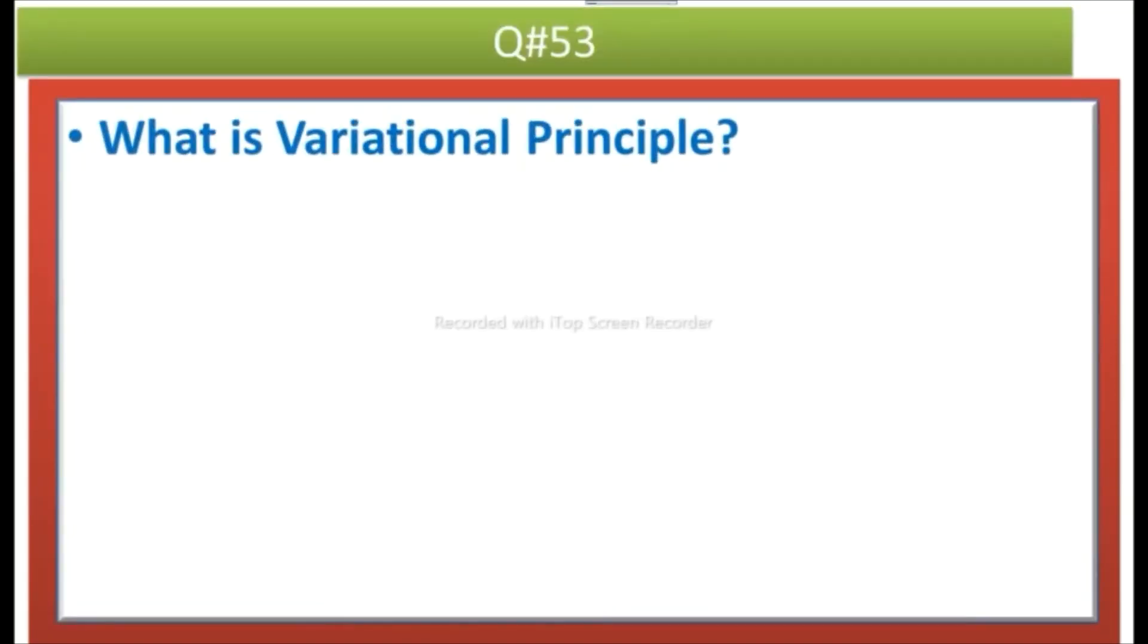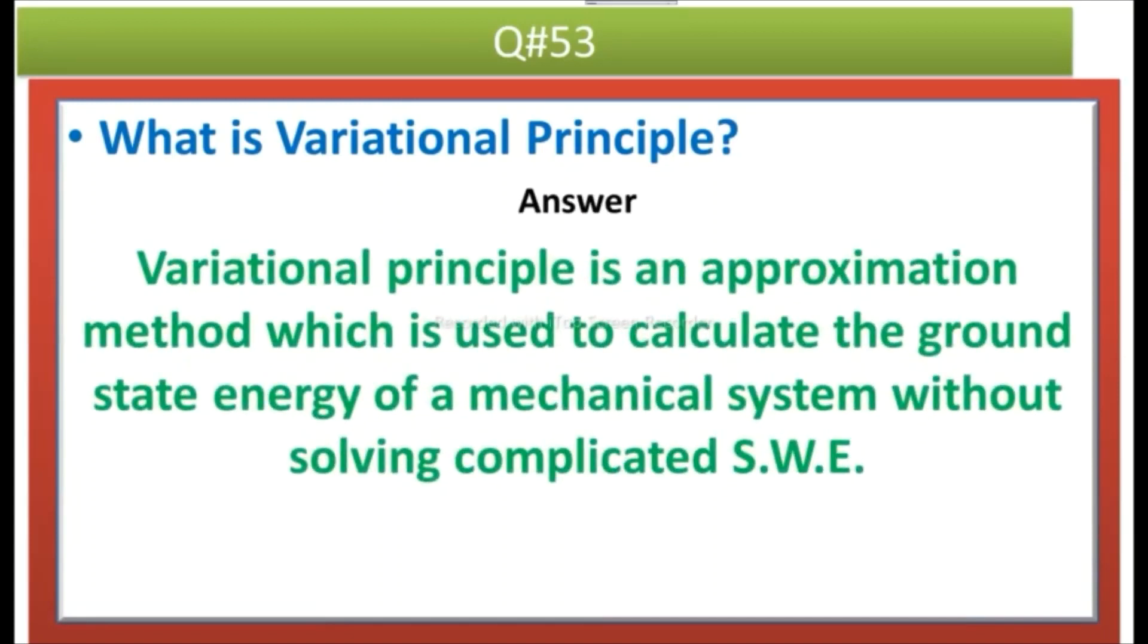The next question is what is variational principle? Answer: Variational principle is an approximation method which is used to calculate the ground state energy of a mechanical system without solving complicated Schrödinger wave equation.